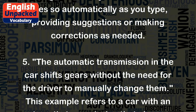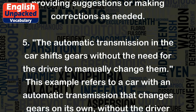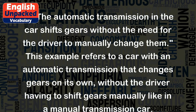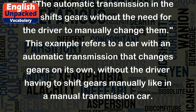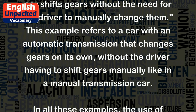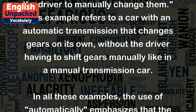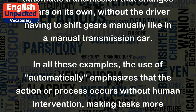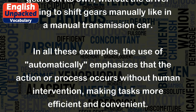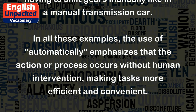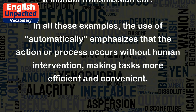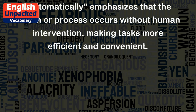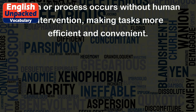Example 5: The automatic transmission in the car shifts gears without the need for the driver to manually change them. This refers to a car with an automatic transmission that changes gears on its own, without the driver having to shift gears manually like in a manual transmission car. In all these examples, the use of automatically emphasizes that the action or process occurs without human intervention, making tasks more efficient and convenient.